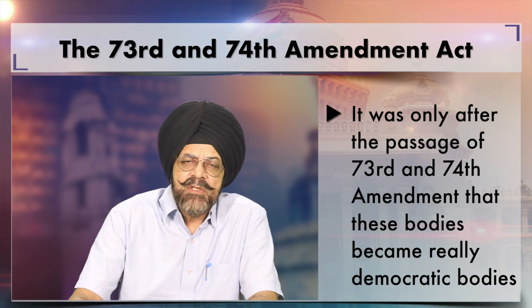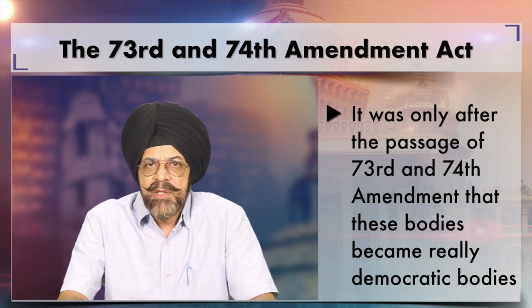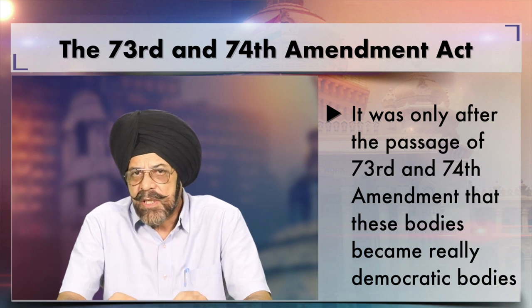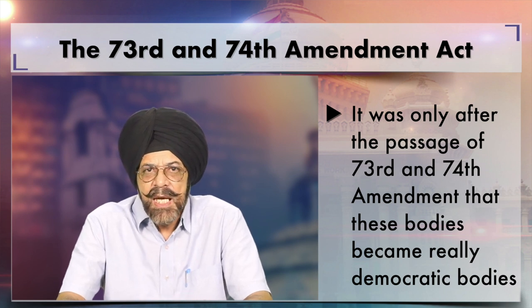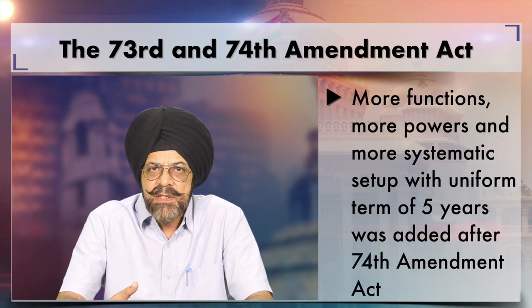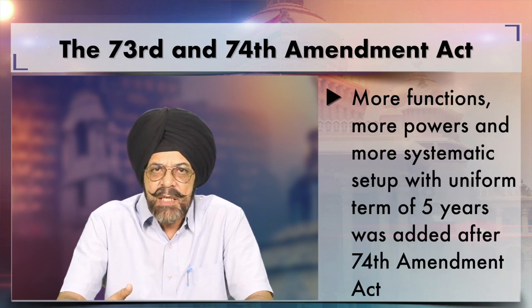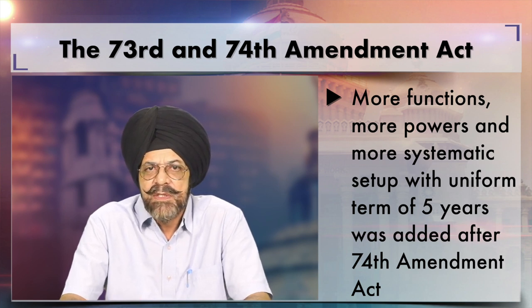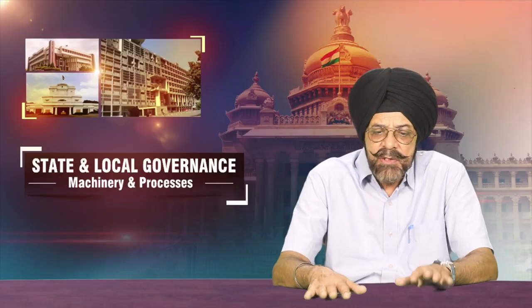There was no self-government; it was only a unit of the state government in most cases. It was only after the passage of the 73rd and 74th Amendment that these bodies became really democratic, and at the same time more functions, more powers, and a more systematic setup with a uniform term of five years were added after the 74th Amendment.